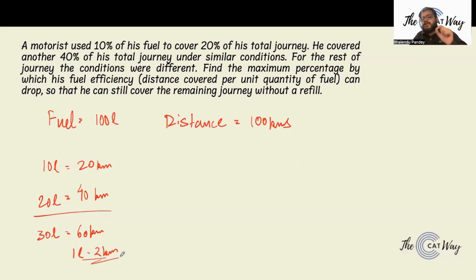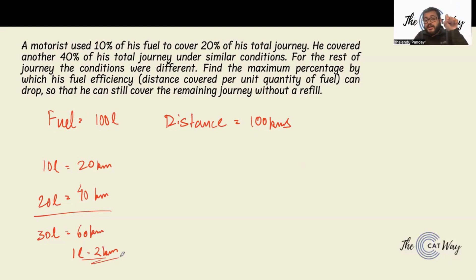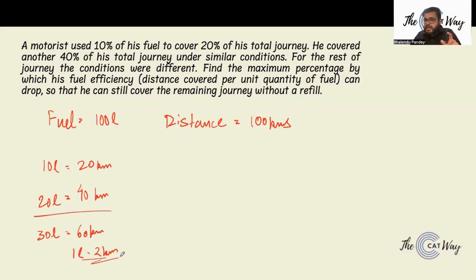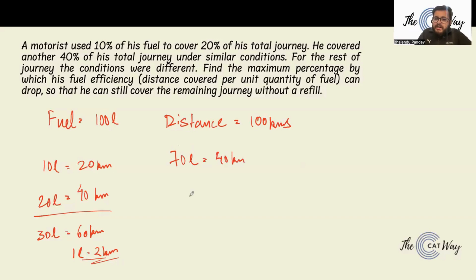Find the maximum percentage by which his fuel efficiency can drop so that he can still cover the remaining journey without a refill. He has 70 liters of fuel remaining and has to go 40 kilometers. So for this part the minimum fuel efficiency needed is 40 by 70, which is 4 by 7 kilometers per liter. Initially it was 2 kilometers per liter.